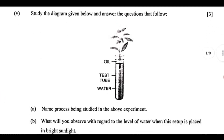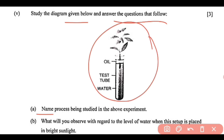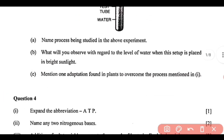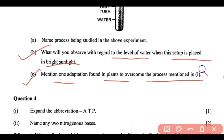Now question number 5: a diagram is given — you have to study it and answer the questions that follow. You have to name the process being studied in the above experiment — this is basically transpiration. Next question: what will you observe with regard to the level of water when this setup is placed in bright sunlight? The level of water will decrease. Next, question C: mention one adaptation found in plants to overcome transpiration — you can write narrow leaves.